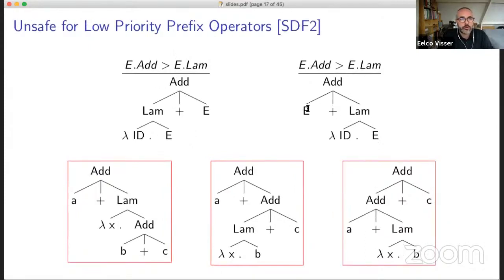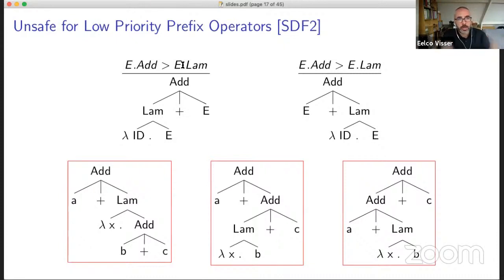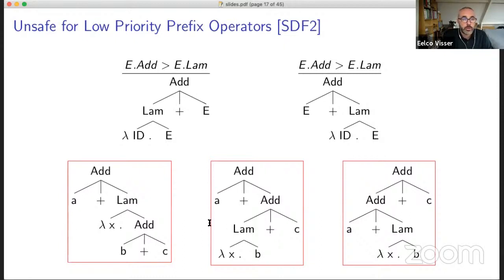However, this approach is unsafe for low-priority prefix operators like the lambda we saw before. If we have addition as higher priority than lambda — typically we want lambda to extend as far to the right as possible — then if we have a lambda of an addition, the addition is under the lambda and we don't have an addition of a lambda with something. So lambda should have low priority, giving us two rules: lambda cannot occur on the left of an addition, nor on the right of an addition.